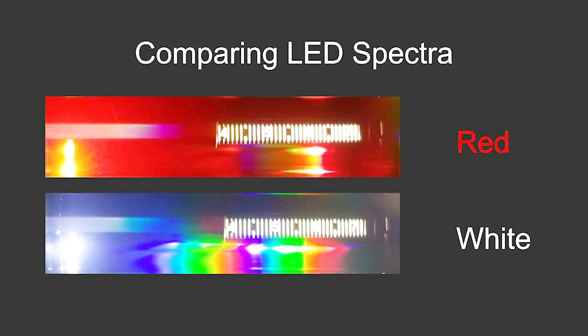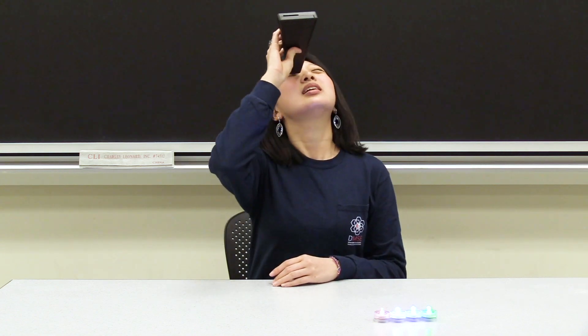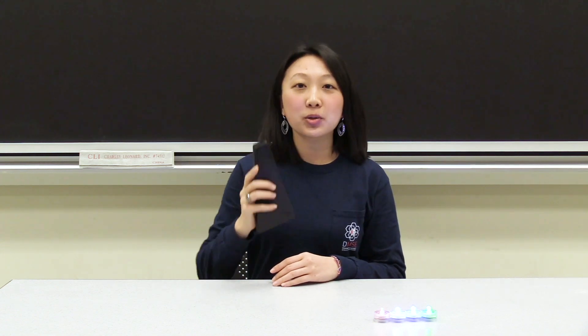After looking at the red and white LEDs through the spectrometer, you should see something like this. Notice how for the red LED, mostly the red and orange bands are visible, whereas for the white LED, almost all the colors are visible. Another thing that you could explore is using your spectrometer to look at the ceiling lights and seeing how that spectra would differ from the spectra that you observe from your LEDs.